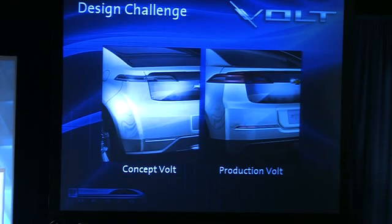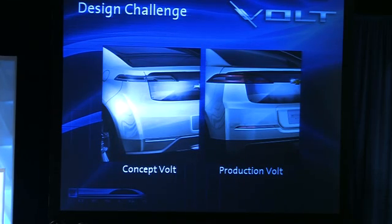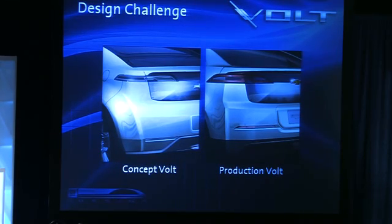Moving to the rear — and this is actually the first time we've shown any of the rear of the production car — you'll notice that while the two vehicles are very similar in their design vocabulary, I want to point out the little vertical fin element on the rear corner of the production Volt. Air wants to stay attached to the car, but it has to leave at some point, and it needs to leave very quickly. So we put an aerodynamic trip device back there so that when it leaves the car, it separates cleanly and quickly and doesn't send turbulence into the vehicle's wake.